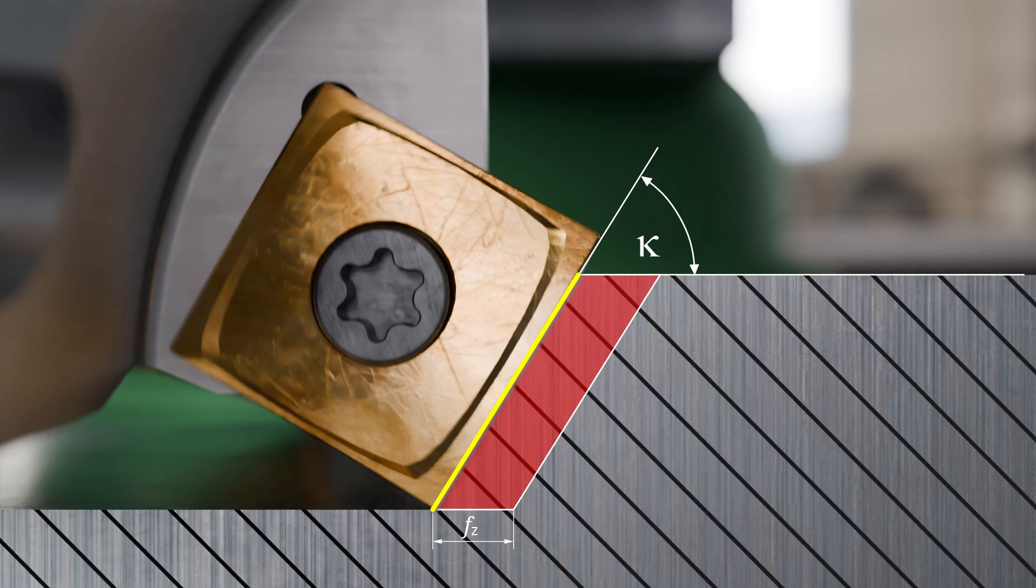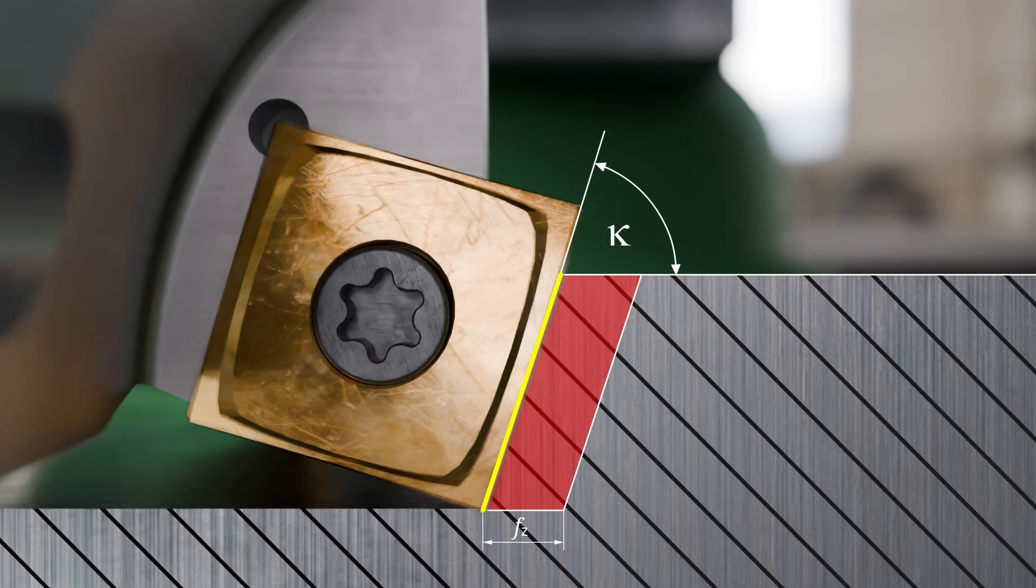With a constant feed per tooth, the chip thickness also decreases due to the smaller approach angle. Conversely, with larger approach angles, the chip thickness increases and the load on the cutting edge also increases. This reduces the tool life.